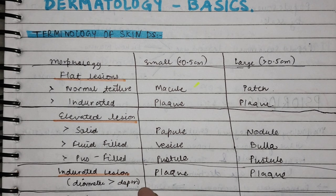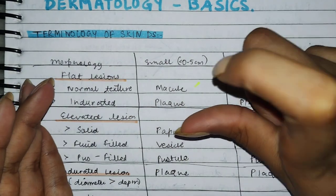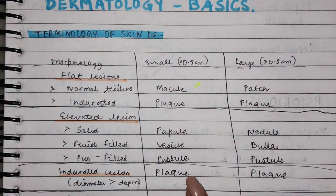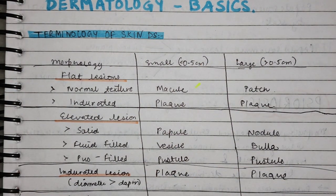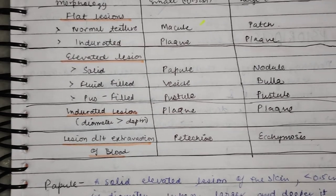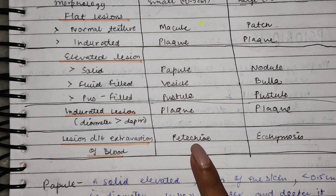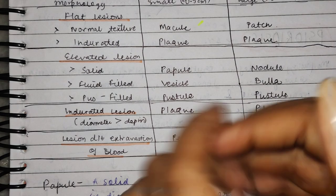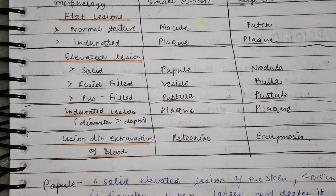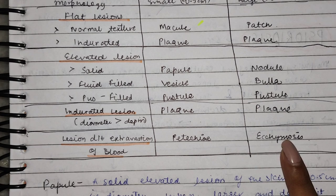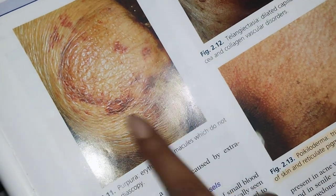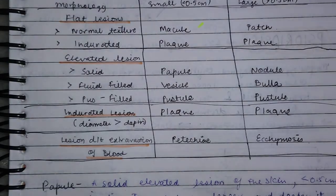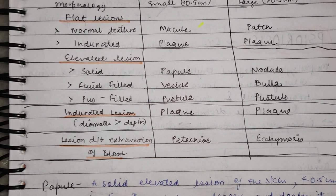What happens in this — the diameter is bigger compared to the depth, so we will call it plaque. In addition to this, there is a lesion which is blood extravasation outside. So there are two lesions: if it is small, it is called petechiae — small hemorrhages. And if there is a big area of hemorrhage, or a big area of blood extravasation, it is called ecchymosis. You can see the photo of ecchymosis here. So this is the basic terminology for skin disease.